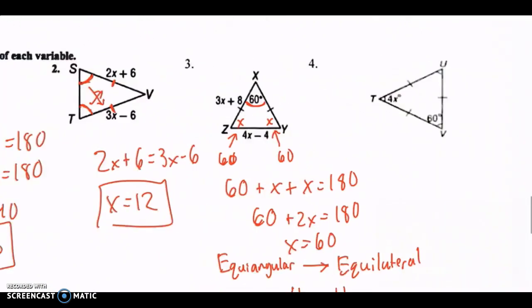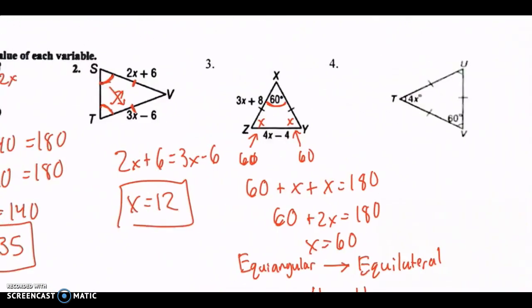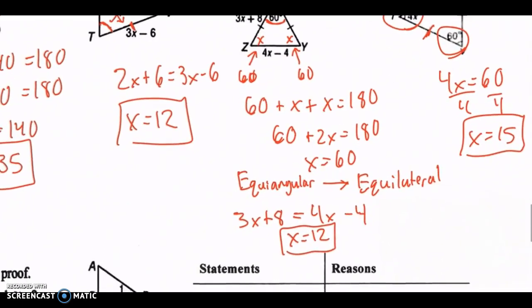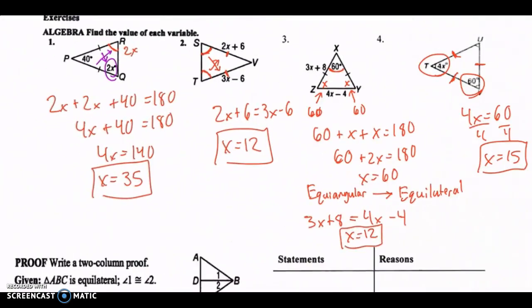Last one here, last and of course the easiest one. We know these angles have to be equal since we have an equilateral triangle. So 4x equals 60 divided by both sides by 4. Boom, magic. Feel free to check your answers real quick.